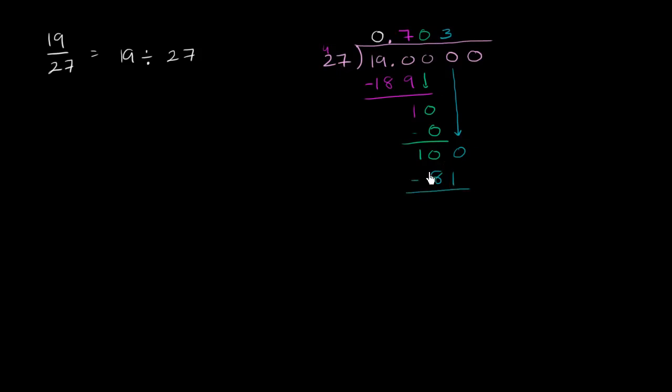And then when we subtract 100 minus 81, well, we could take 1 from the hundreds place and make it 10 tens. Then we could take one of those tens from the tens place and turn it into 10 ones. So 9 tens minus 8 tens is equal to 1 ten. And then 10 minus 1 is 9. So it's equal to 19. You might have been able to do that in your head.